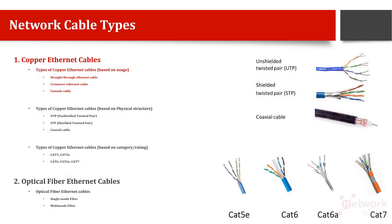Network cables have two main types: the first type is copper ethernet cables and the second type is optical fiber based ethernet cables.